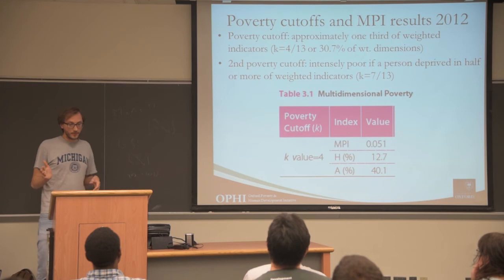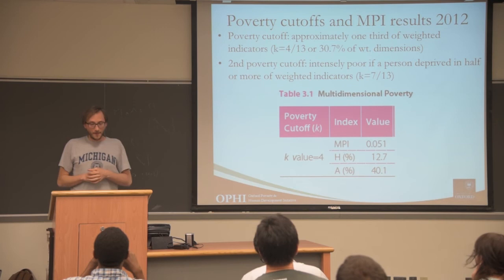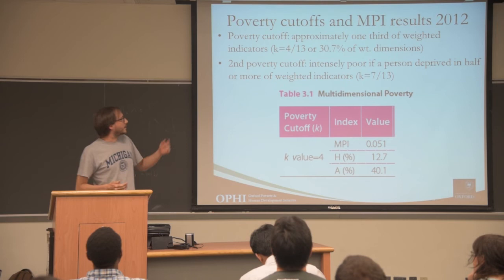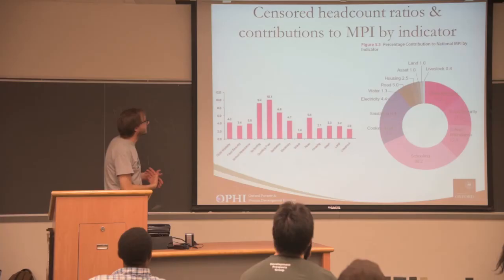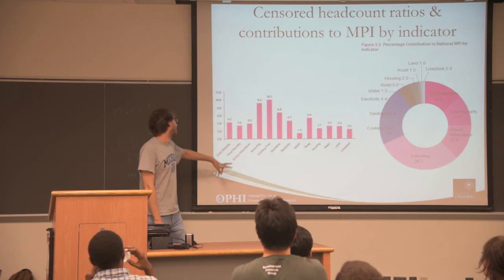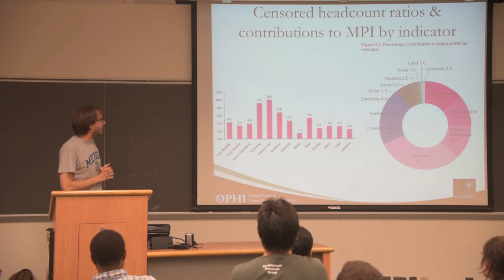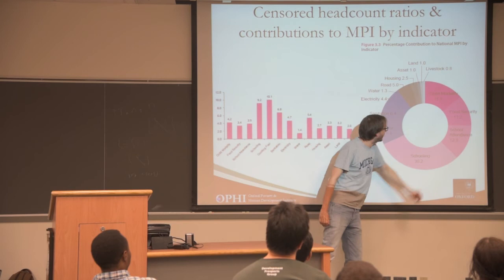The results for 2012 show a headcount of 12.7% multidimensionally poor. Intensity A is 40.1%, meaning the poor are on average deprived in 40% of weighted indicators, and the MPI is 0.051. Looking at censored headcount ratios and contributions to MPI poverty by indicator: cooking fuel affects 10.1% of people who are multidimensionally poor, and schooling affects 9.2%. Overall the education dimension contributes 43.1% to total poverty, even though its weight is only one-third — it's really important.